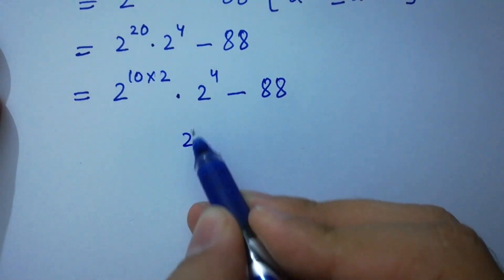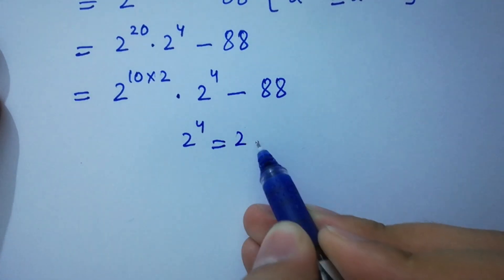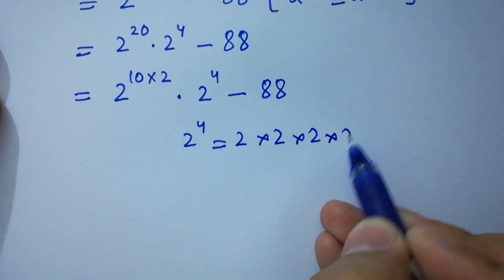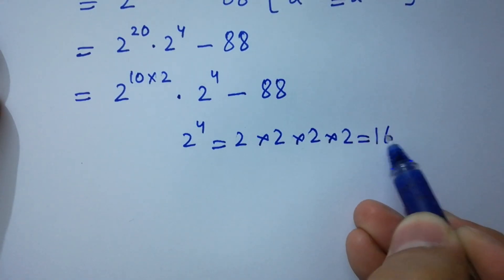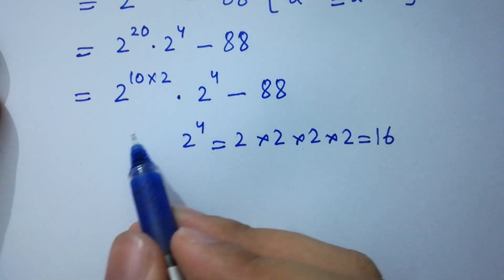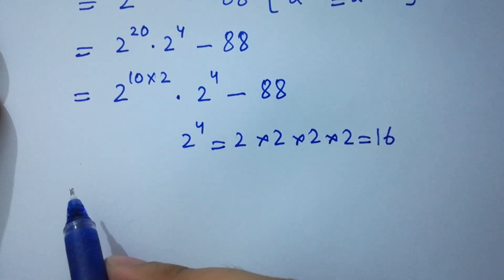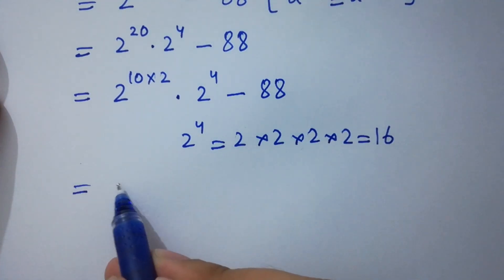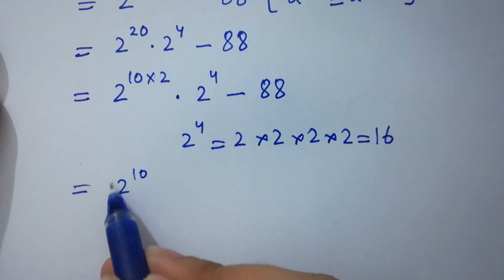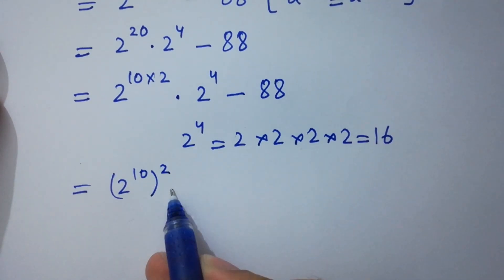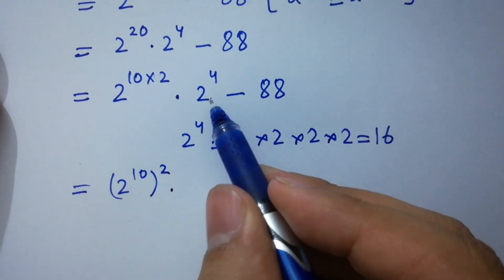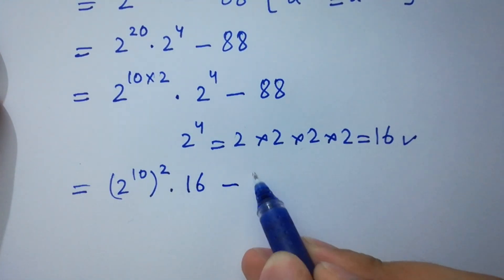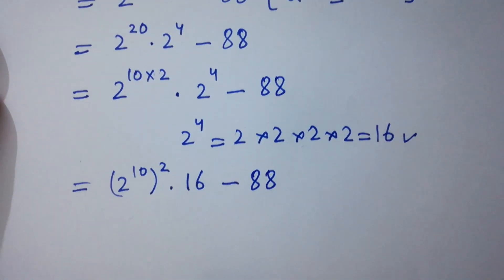Now, 2^4 equals 2×2=4, 4×2=8, 8×2=16, so 2^4 = 16. And 2^10 can be rewritten as (2^10)² times 2^4, giving us 16, minus 88.